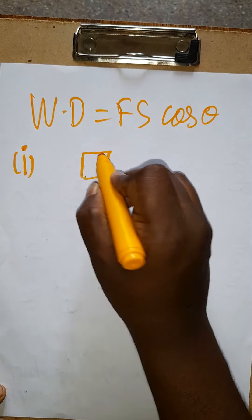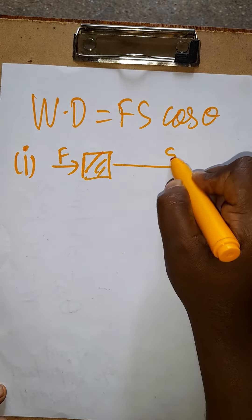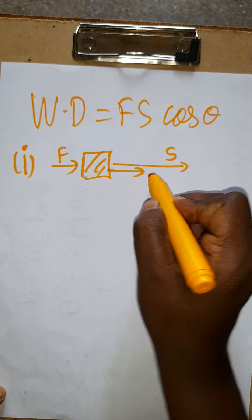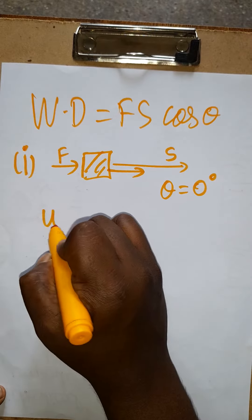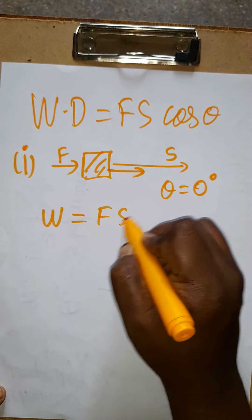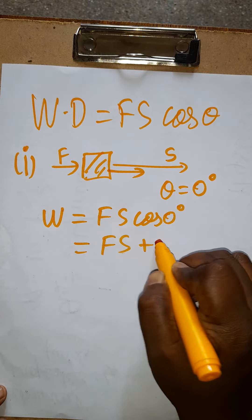Positive work done: I have a book. I apply the force in this direction. Displacement of the book is also in this direction. Force this side, displacement this side. Theta will be zero degrees. Cos zero will be one. So W equals FS cos zero degrees. Cos zero degree will become one, so W equals FS. It is called positive work done.